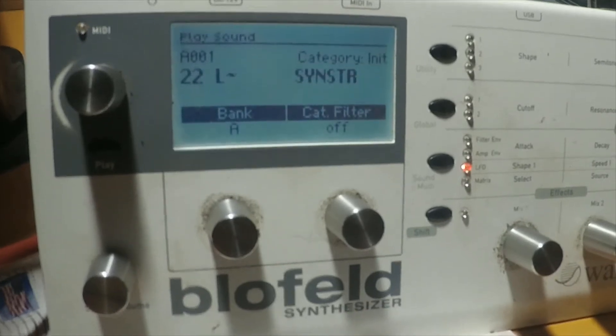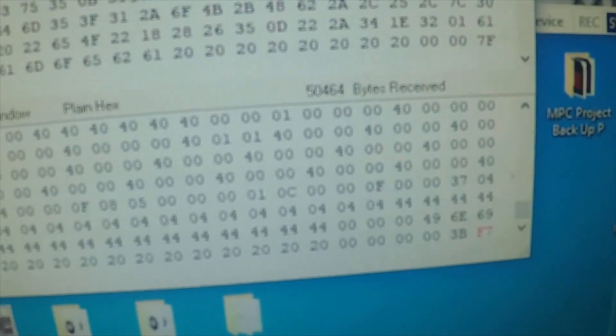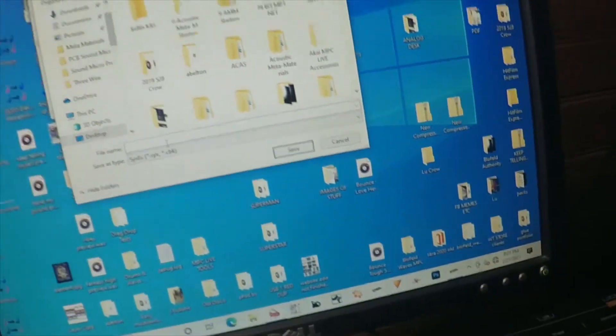Alright, so that's done. You click Done, go to the Command Window, Save As, and go down to Bank A. So we'll save Bank A.